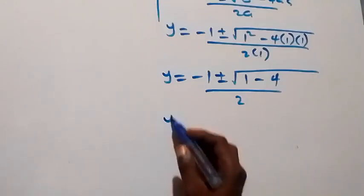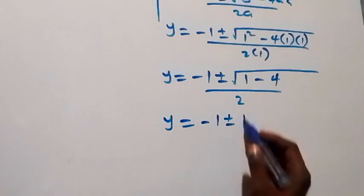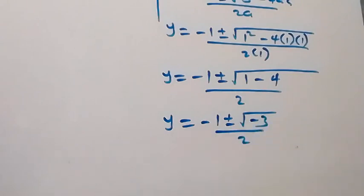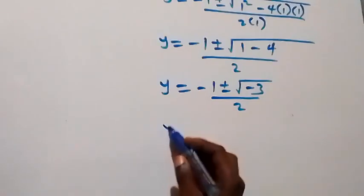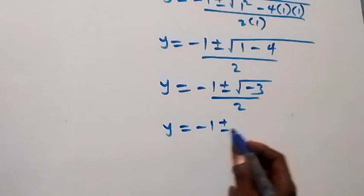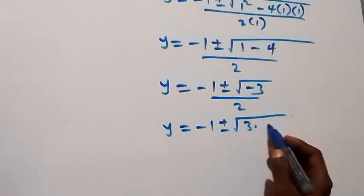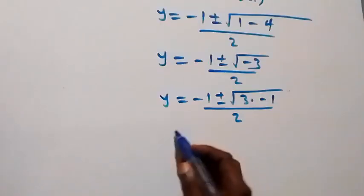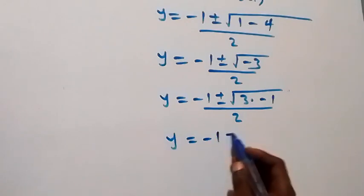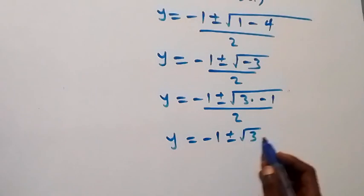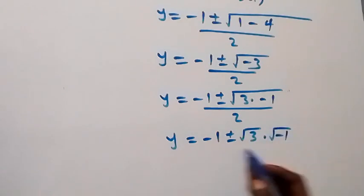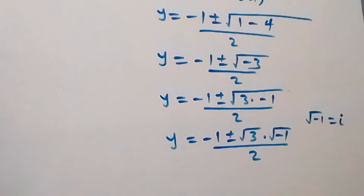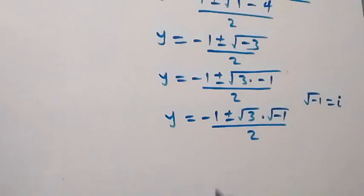And here, we can write this as y equals to negative 1 plus or minus square root of negative 3 over 2, which we can also separate as y equals to negative 1 plus or minus square root of 3 times root of negative 1, over 2. And root of negative 1 is the same thing as i, which is imaginary — that is, a complex number.